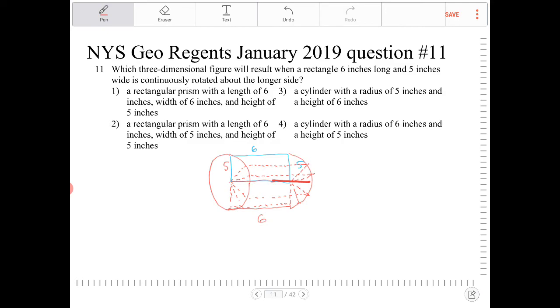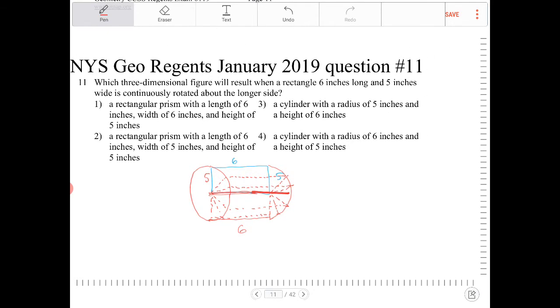So there you have it. Which option would that be? A cylinder with a radius of five and a height of six? That would be option three.